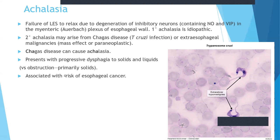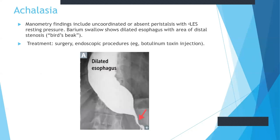Chagas disease can cause achalasia. It presents with progressive dysphagia to solids and liquids and is associated with increased risk of esophageal cancer. Here you can see Trypanosoma cruzi, which are the extracellular trypomastigotes. These same organisms are also seen in non-ischemic cardiomyopathy due to Trypanosoma infestation into the cardiac muscle. Manometry findings include uncoordinated or absent peristalsis with increased lower esophageal sphincter resting pressure. Barium swallow also shows a dilated esophagus with distal stenosis — the bird beak sign. Treatment is surgery and endoscopic procedures like botulinum toxin injection.